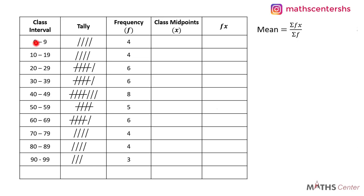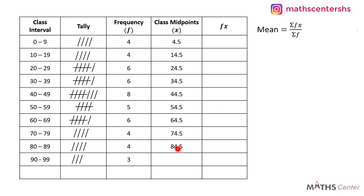So the first class midpoint is 0 plus 9 divided by 2, which is 4.5. The next is 10 plus 19 divided by 2, that's 14.5. Then we have 24.5, 34.5, 44.5, 54.5, 64.5, 74.5, 84.5, and the last one is 94.5. To get the class midpoints you add the lower class limit to the upper class limit and divide the result by 2.